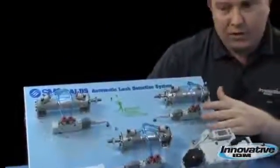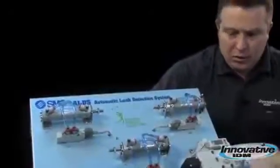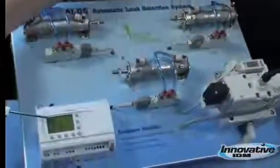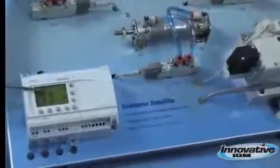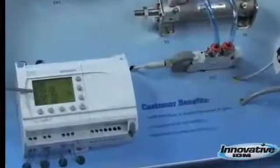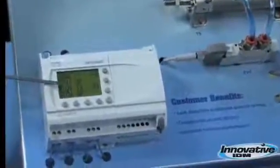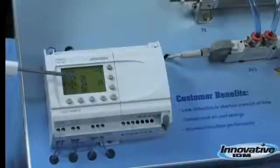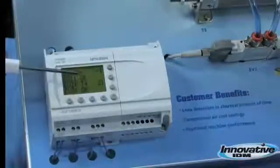When the ALDS has finished its cycle, it will have sent a notice to your PLC to notify you if the station was okay or if you had a failure where the failure was located. In this particular case, the failure was at location T4.